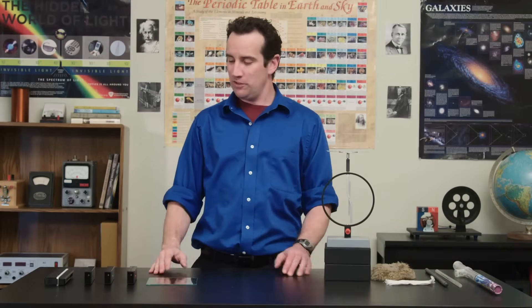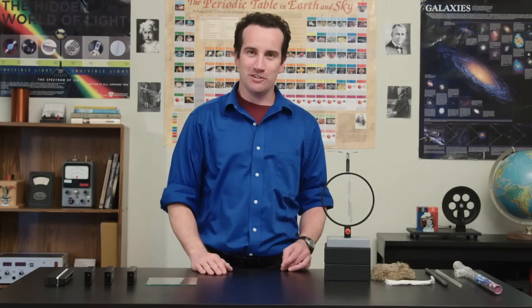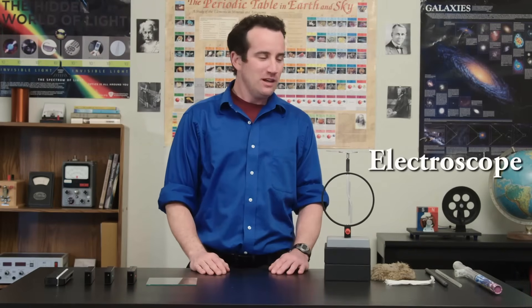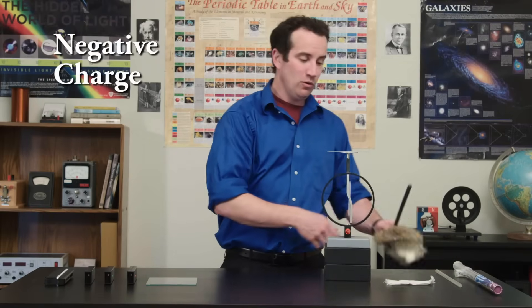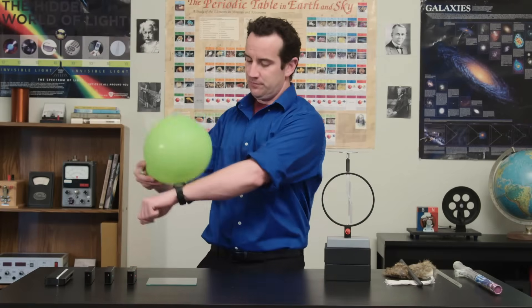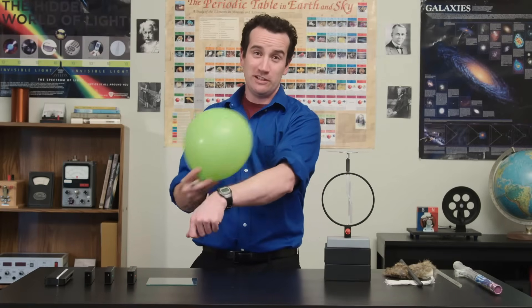You can demonstrate Einstein's photoelectric effect with a few commonplace lab materials and an electroscope. Get some negative charge, for example with a rubber rod and animal fur or with balloons, and place it on top of the electroscope.